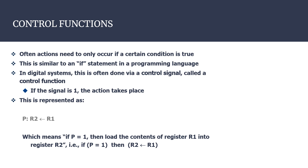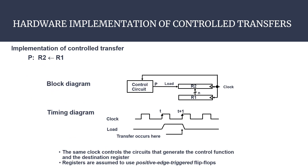Now let us discuss the hardware implementation of control transfers. In this block diagram, we have source register R1 and destination register R2. These two registers are connected by n-bit data lines used to transfer the contents of R1 to R2 — the size of both registers is n bits. All three components: R1, R2, and the control circuit are connected to the same clock pulse to operate at the same frequency.